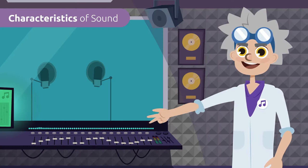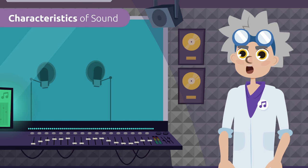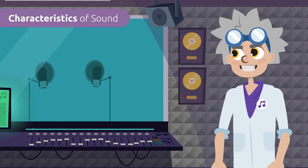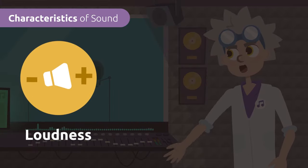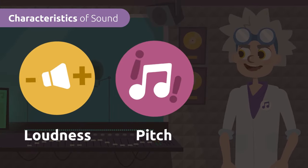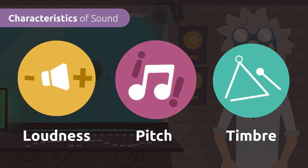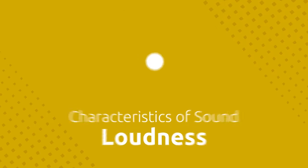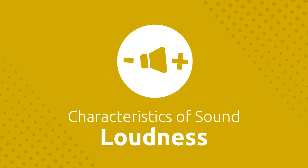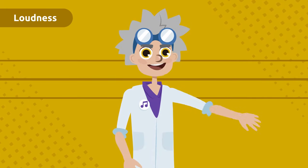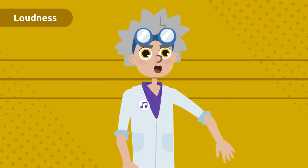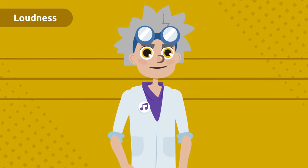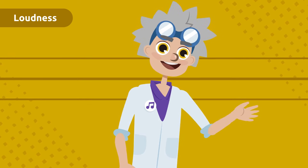Sounds have three main characteristics that help us differentiate them from each other. These characteristics are loudness, pitch, and timbre. Loudness is the energy that is produced by sound waves. If the loudness is high, then the sound will be loud.